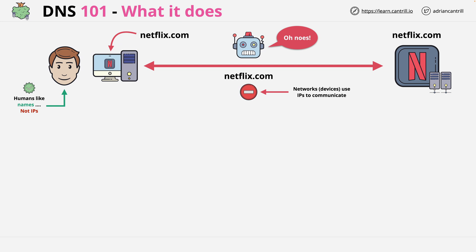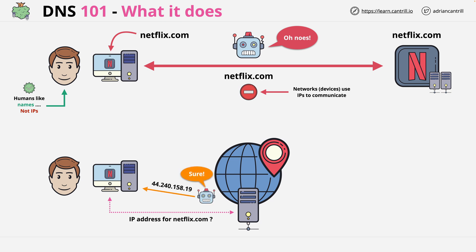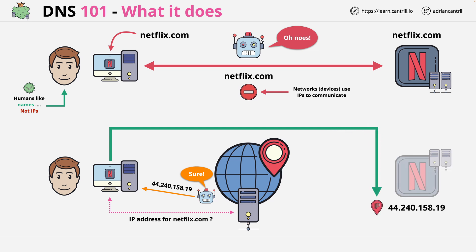DNS actually does many different things, but at its core it's like a big contact database. In this context, it links names to IP addresses. So using DNS when accessing Netflix, we would ask DNS for the IP address of Netflix. It would return the answer, and then our device would use that IP address to connect over the internet to the Netflix servers.